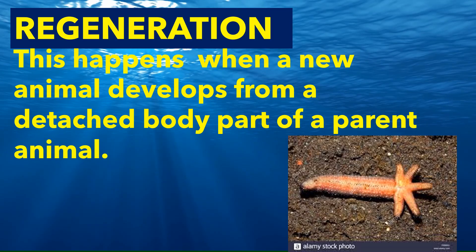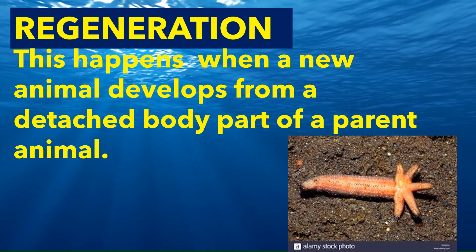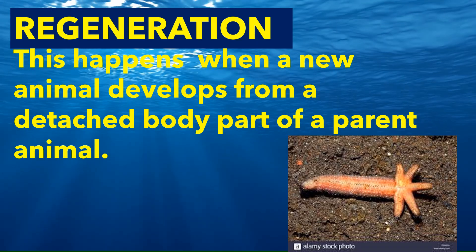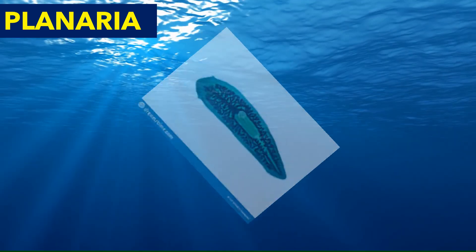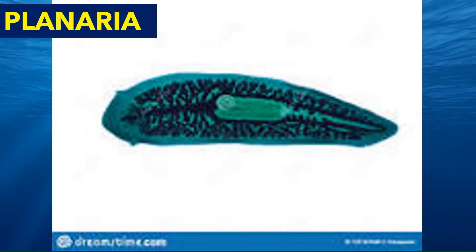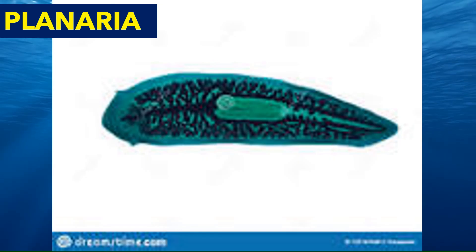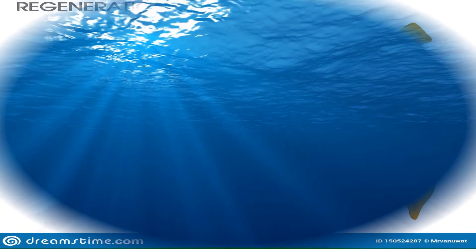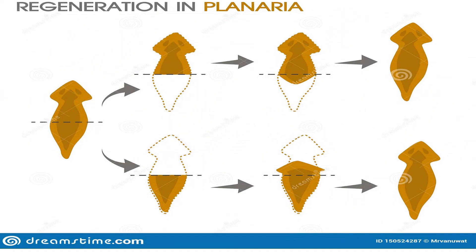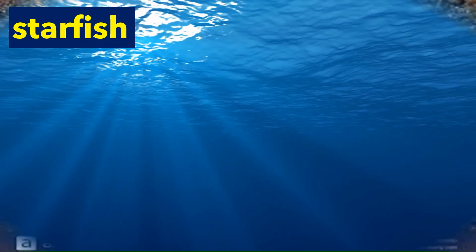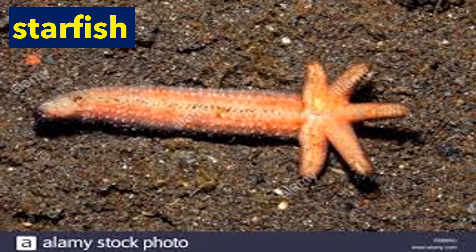Regeneration happens when a new animal develops from a detached body part of a parent animal. Planaria is an example of an animal which reproduces by regeneration — a parent planaria divides or splits into two and each half regenerates and develops into two different individuals. A starfish also undergoes regeneration.